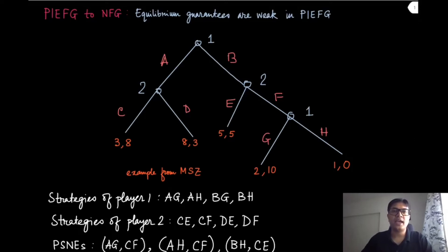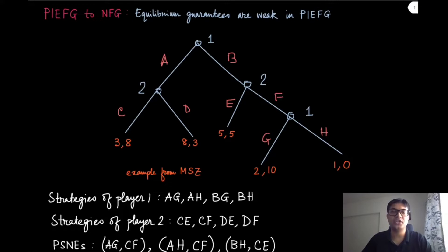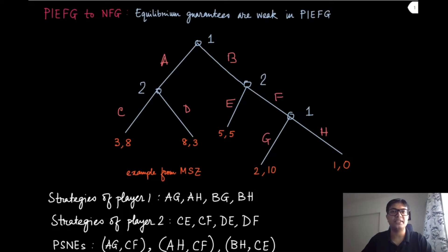We have seen an example of a PIEFG, the perfect information extensive form game, transform into a normal form game, and we have also seen how you can find the usual concepts of equilibrium like the Nash equilibrium, pure strategy Nash equilibrium in that transformed NFG. But we have also concluded that there are certain outcomes in that PSNE which are not really a credible threat.